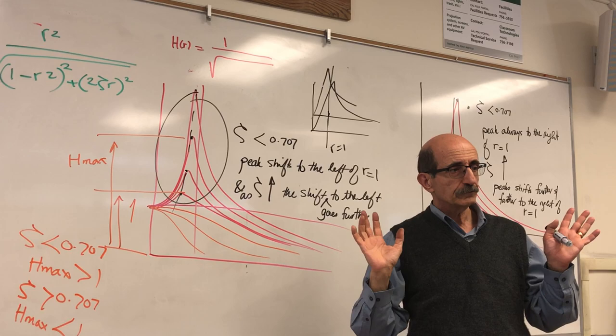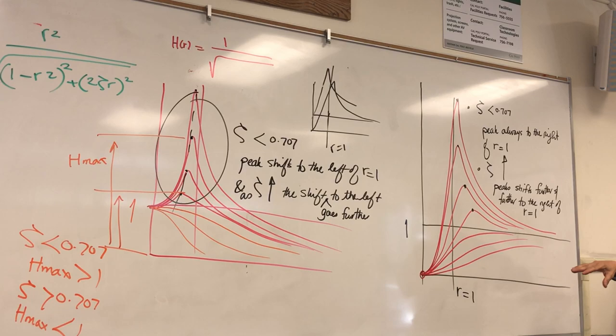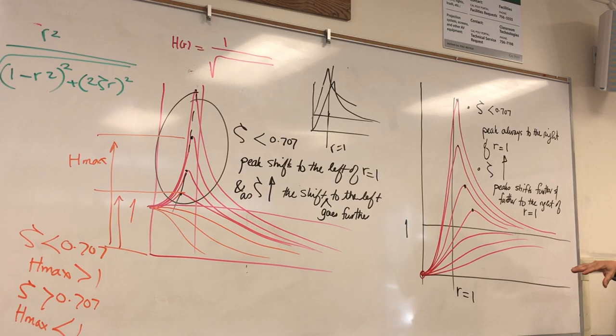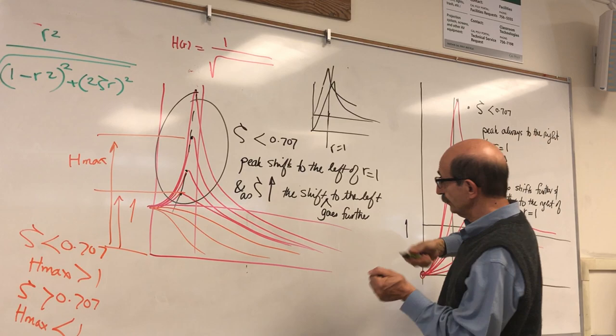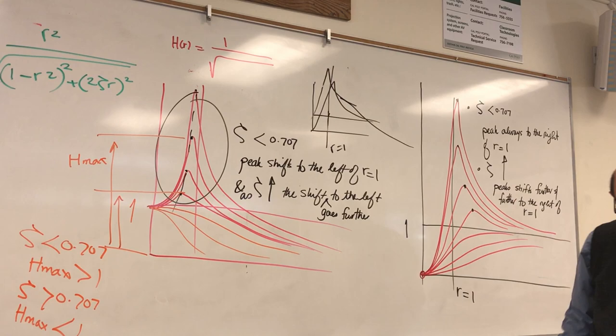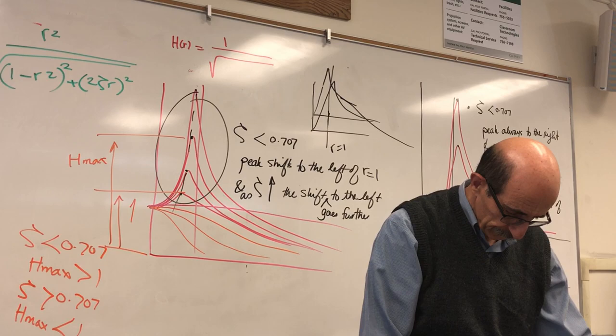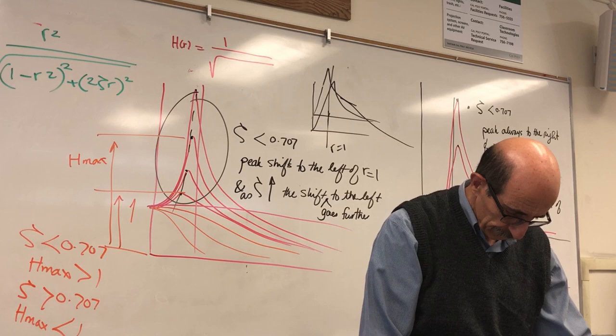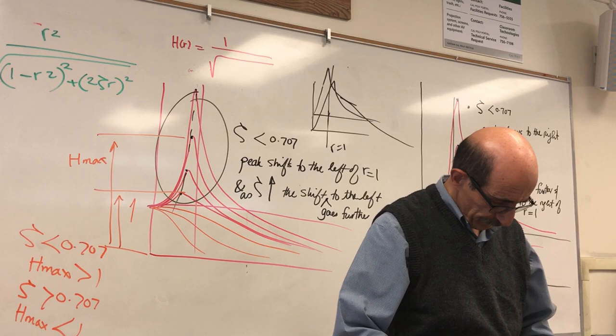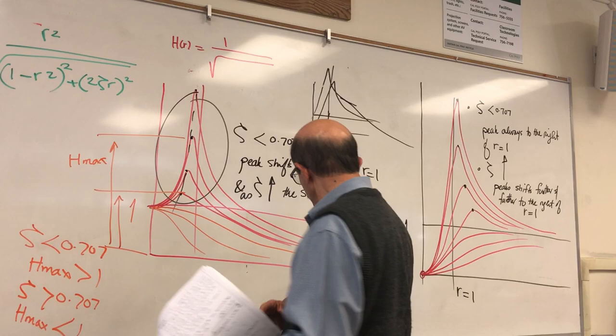A student asks: do they go to 1? Yes, the rotating unbalance curves reach a limit of 1 and never go to zero, whereas in the standard harmonic case the response goes to zero at the limit. Let's now do an example problem of rotating unbalance.